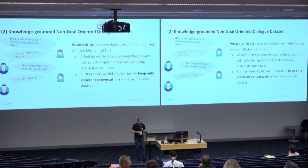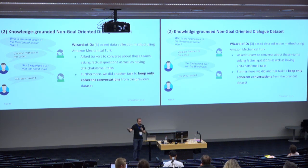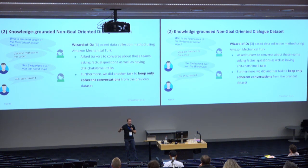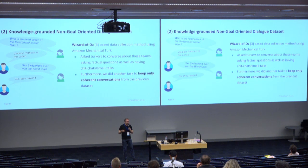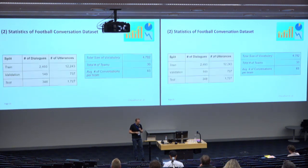This was done using a Wizard of Oz study and crowdsourcing. In a Wizard of Oz study, you have two different roles for crowd workers. One role is the actual user, who can ask questions or have small talk conversations about football. They are told there is an AI system responding to them, but in fact the AI system role is played by another group of users who try to respond as well as possible. We did a follow-up Amazon Mechanical Turk task to keep only the coherent conversations that actually make sense, discarding the random input. At the end, we had a reasonably high-quality dataset of around 3,000 dialogues split into train, validation, and test sets, covering 30 football teams with approximately 83 conversations per team and a vocabulary of 4,782 unique words.